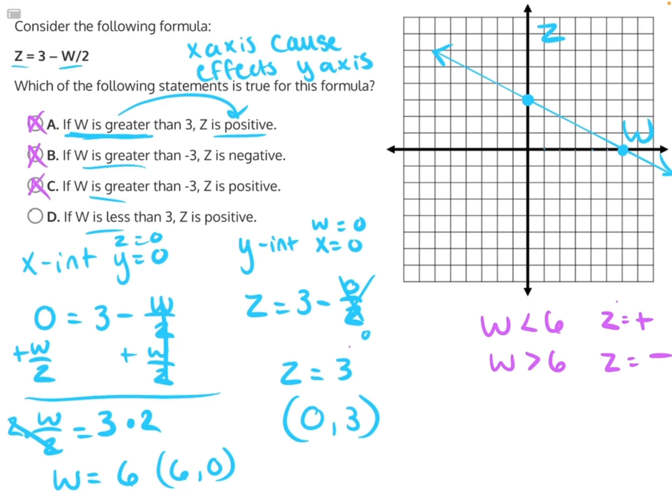D by process of elimination is our correct answer, but I'll show you why it's correct. If w is less than 3, which is right here, then z is positive. Well, less than is to the left, and all of these values are indeed going to be positive into infinity, making D the correct answer.